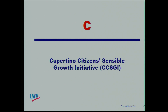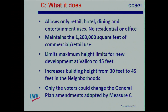Starting with Measure C itself, called the Cupertino Citizen Sensible Growth Initiative. What Measure C does at Valco is it removes residential and office development — that is, 2 million square feet of office space currently allocated in the general plan — allowing only retail, hotel, dining, and entertainment uses in Valco. It would eliminate the 389 residential units presently allocated to Valco, and would maintain, as a firm figure, the current 1.2 million square feet of commercial retail at Valco.